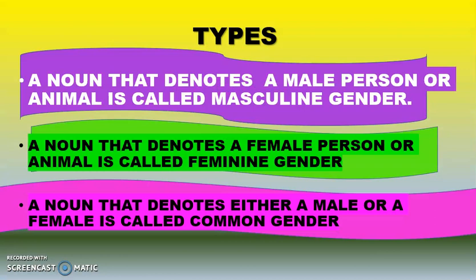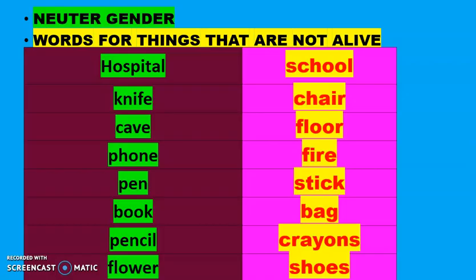Let's see what are the types of genders. A noun that denotes a male person or animal is called masculine gender. A noun that denotes a female person or animal is called feminine gender. Next, a noun that denotes either a male or a female is called common gender. Then we have neuter gender — that is words for things that are not alive.